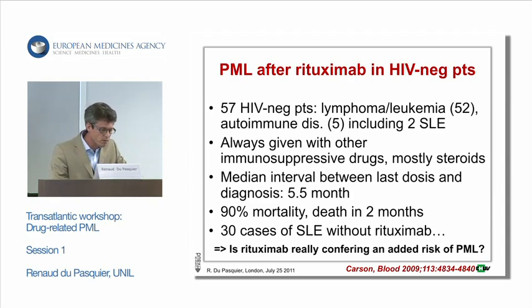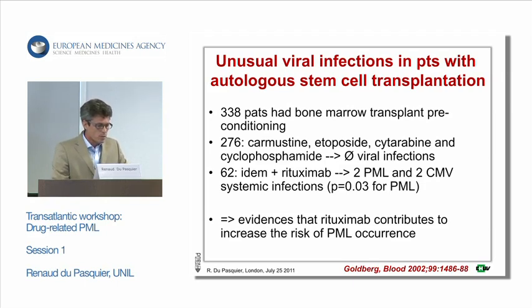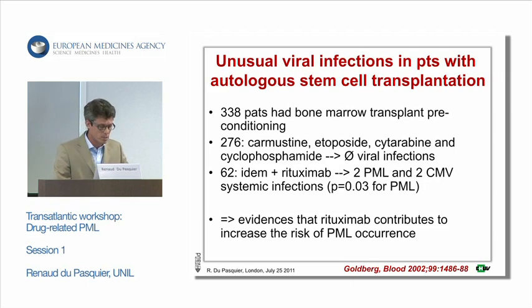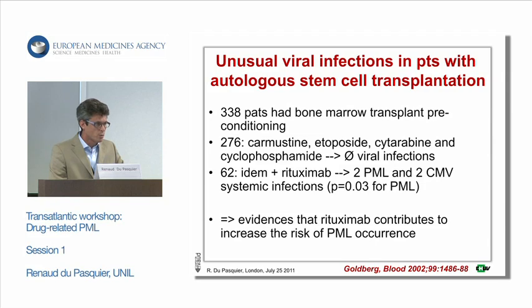So, is rituximab really conferring an added risk of PML? These papers seem to confirm this notion. In one study, the authors studied patients with autologous stem cell transplantation. 276 received high-intensity chemotherapy with cytarabine, cyclophosphamide, carmustine, and etoposide, with no unusual viral infections. However, in the 62 patients who received exactly the same treatment plus rituximab, there were two cases of PML and two cases of cytomegalovirus systemic infections. A Fisher's exact test just for PML is still significant for an effect of rituximab.